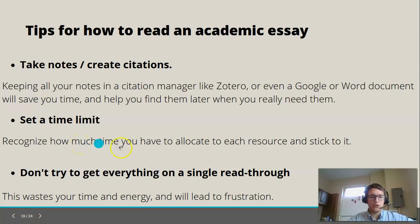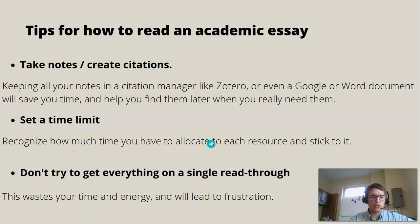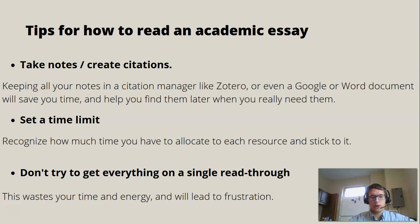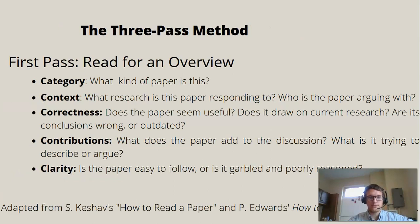I think it's also important when you read an academic article to set a time limit — recognize how much time you have to allocate to each resource and stick to it. One way to keep yourself from being bogged down is to set a little timer. Say, I'm going to work on this article for 30 minutes and when time's up, I'm going to move on. And finally, the basics of the three-pass approach: don't try to get everything on a single read-through — this will waste your time and energy and will lead to frustration.